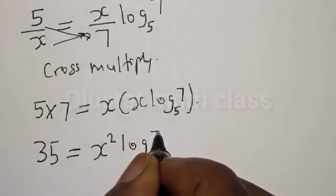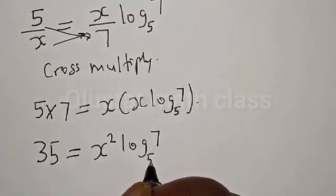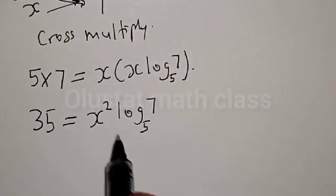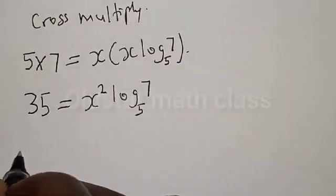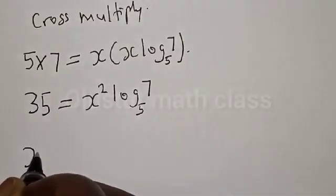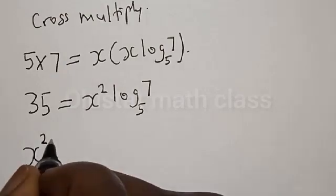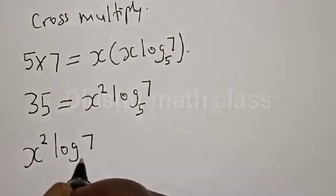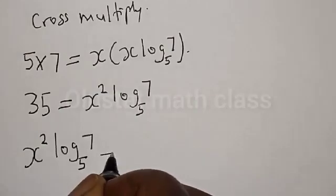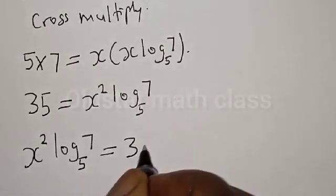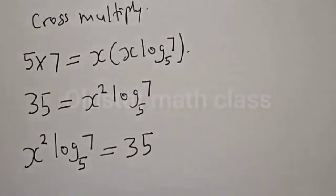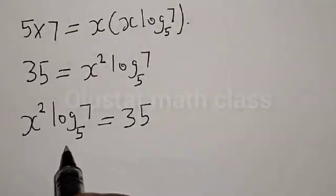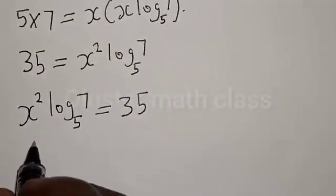This can be rearranged so that x squared times log 7 base 5 is equal to 35. Now let's divide both sides by log 7 base 5.